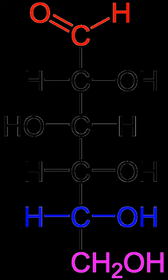Monosaccharides can be linked together into what are called polysaccharides or oligosaccharides in a large variety of ways. Many carbohydrates contain one or more modified monosaccharide units that have had one or more groups replaced or removed. For example, deoxyribose, a component of DNA, is a modified version of ribose. Chitin is composed of repeating units of N-acetylglucosamine, a nitrogen-containing form of glucose.